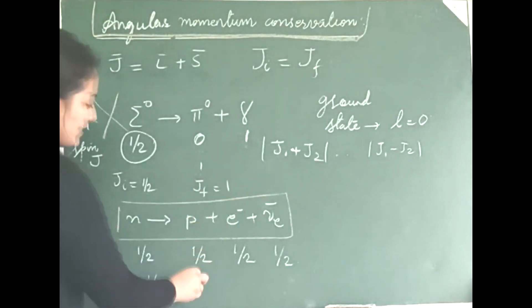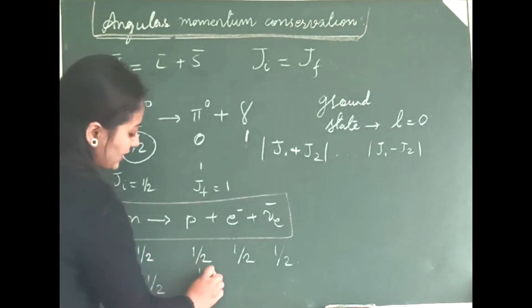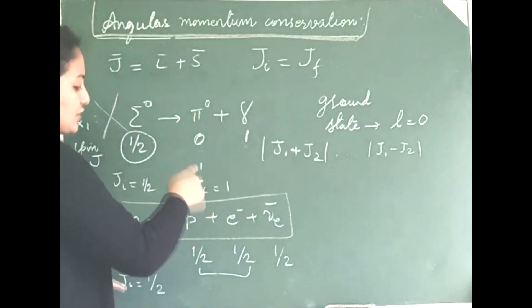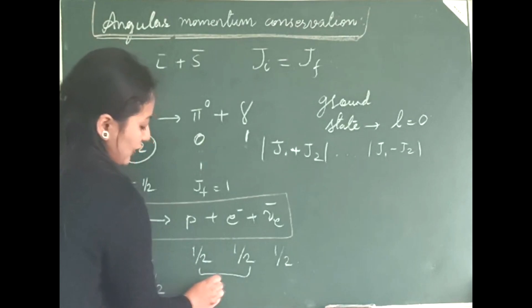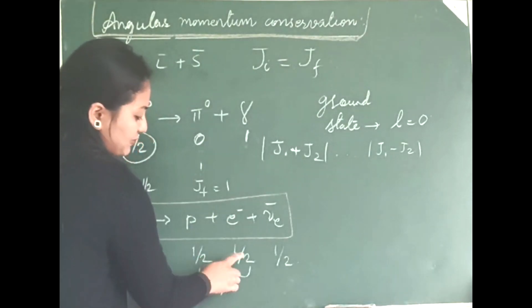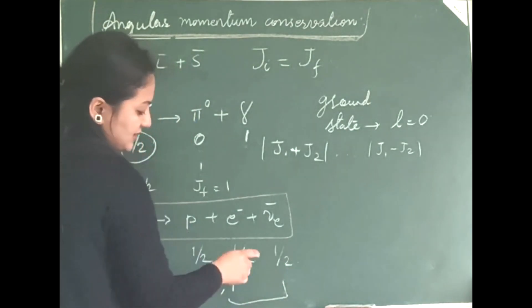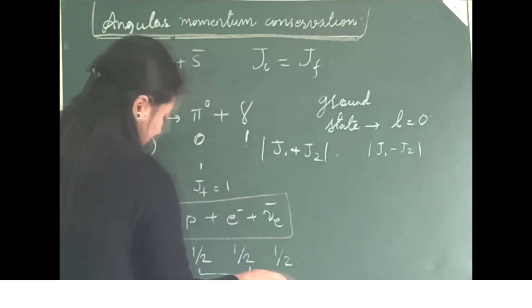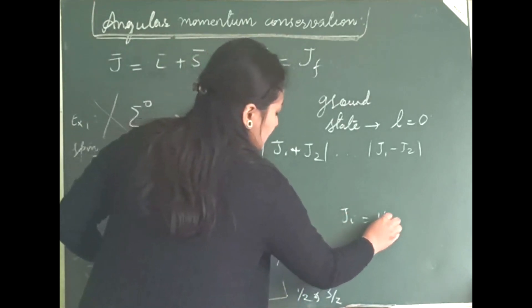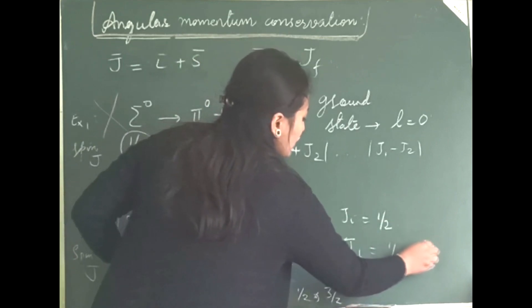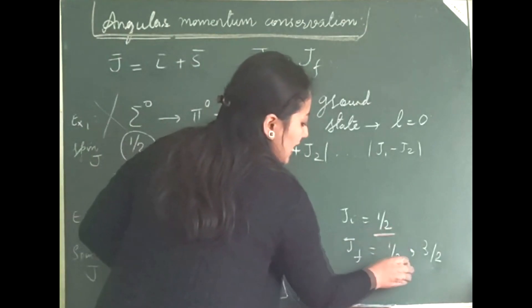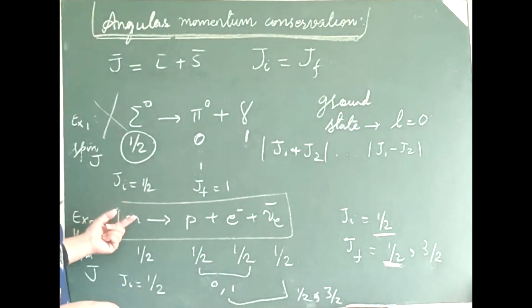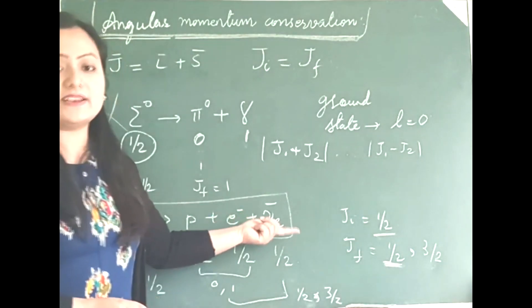Whereas on the product side, you have your Jf. First let me calculate this, half and half. It is J1 plus J2 till J1 minus J2. Half plus half till half minus half. Half plus half is going to give me 1 and half minus half is going to give me 0. Again, this with this is going to give me 0 and half. And 1 and half, it is going to be 3 by 2. For this interaction, your Ji is half and your Jf is half and also 3 by 2. So if you see here, it's half and half, hence this interaction is allowed. And hence, you also know that beta decay is allowed.